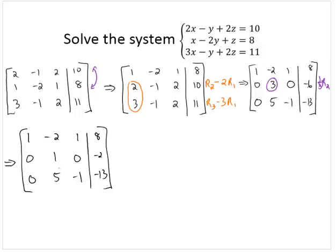Now I will focus on the element below the most recent one. I need to make that element a 0. So again using multiplication and subtraction, I'm going to take row 3 and subtract 5 row 2's. Rows 1 and 2 are going to stay the same.